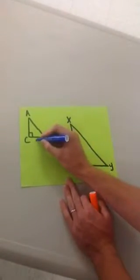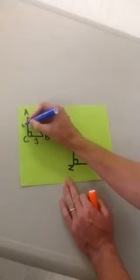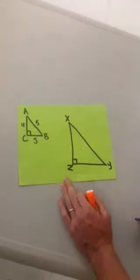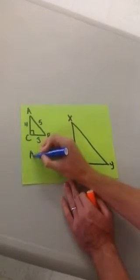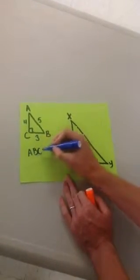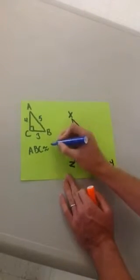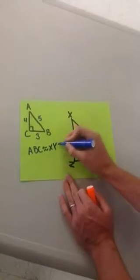So if I know this triangle, for example, is 3, 4, and 5, and then I know ABC is similar to XYZ,